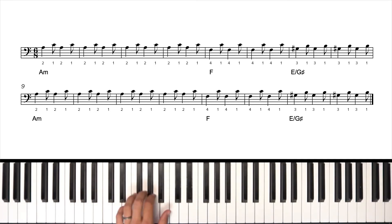So let's try this one now at the medium tempo. One, two, set, go. Now F. E over G sharp. Back to A minor. F again. E over G sharp. All right.